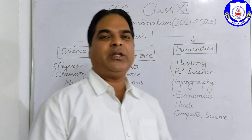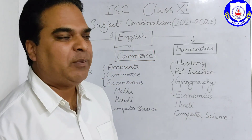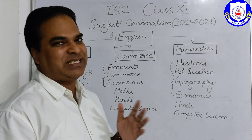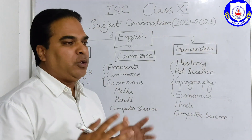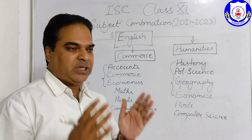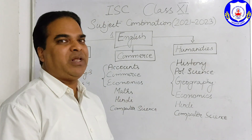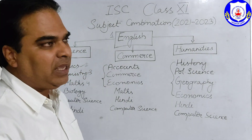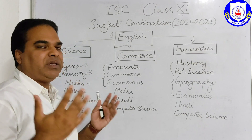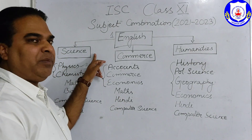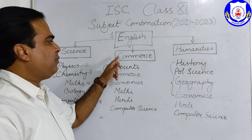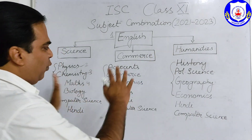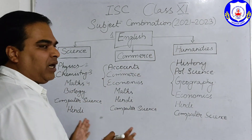Good evening everyone. Today through this video I am going to explain the subject combination for ISC Class 11 students — those who have passed Class 10 and are planning to enroll in Class 11. After Class 10, you will be given three options: the Science stream, Commerce stream, and Humanities stream. Humanities means Arts.